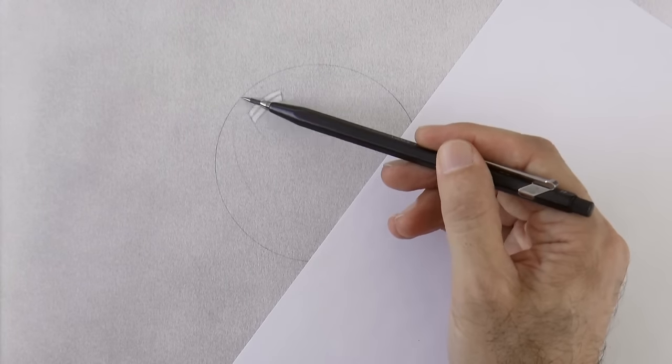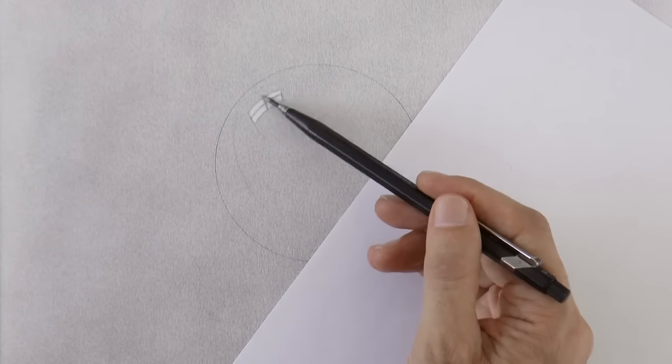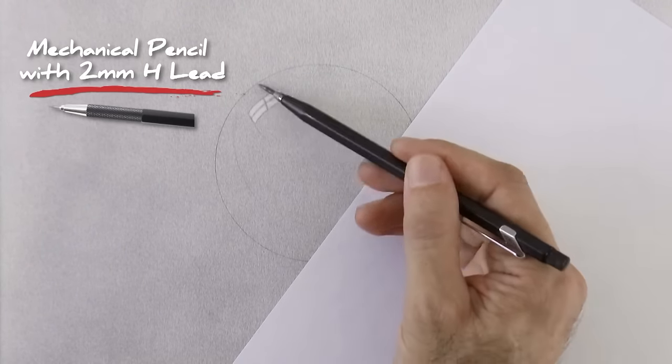The list of materials is in the information below the video. And now with a lead holder or a pencil with a hard lead, a 2H, we begin to shade.